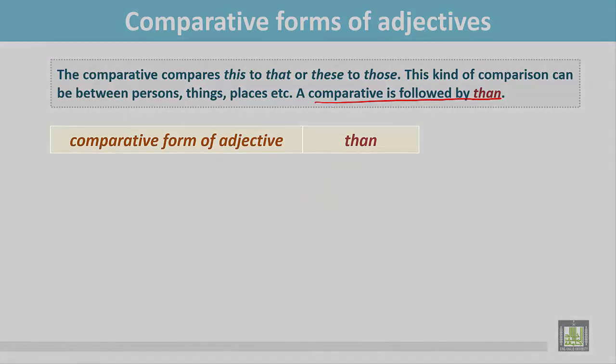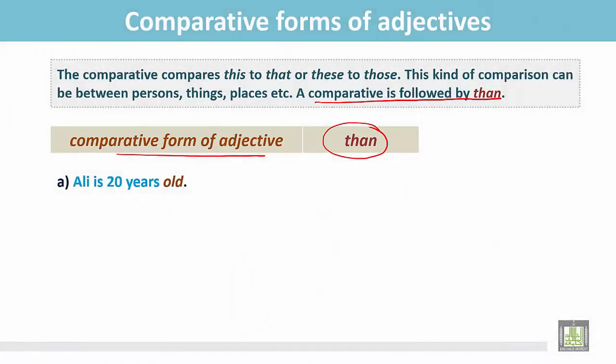The structure: comparative form of adjective, and after that we write than. Examples. Ali is 20 years old. Ahmed is 19 years old.